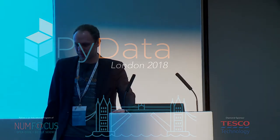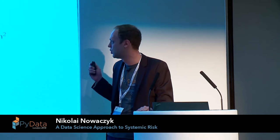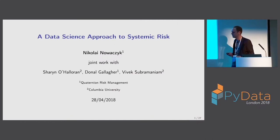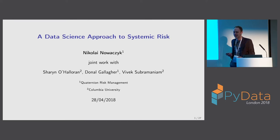Thank you very much for the warm introduction. I'm going to present a data science approach to systemic risk. This is joint work with Professor Sharon O'Halloran from Columbia University in New York, a student of hers Vivek Subramanian, Donald Gallagher, the CEO of Quaternion.